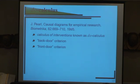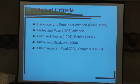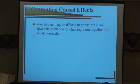Based on do-calculus, a number of sufficient criteria for identification were established by Pearl, his students, and colleagues, summarized in chapters 3 and 4 of Pearl's causality book. However, it's still very difficult to decide whether a particular causal effect is identifiable or not, because the rules give little guidance on how to combine them into a derivation.